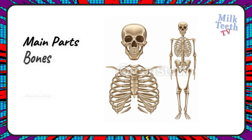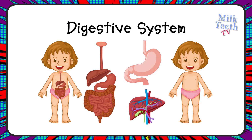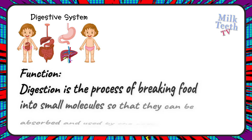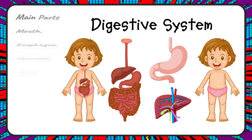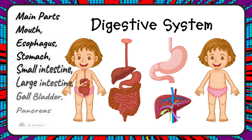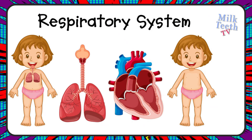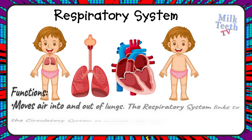Main parts of the skeletal system: the bones and the joints. The digestive system. Digestion is the process of breaking food into small molecules so that they can be absorbed and used by the body. Main parts of the digestive system are the mouth, esophagus, stomach, small intestine, large intestine, gallbladder, pancreas, and the liver.